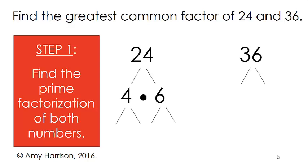I can break up the 4 to 2 times 2, and I can break up the 6 to 2 times 3. So our prime factorization of 24 is 2 times 2 times 2 times 3, or 2 to the third power times 3.